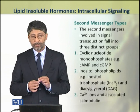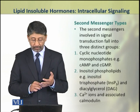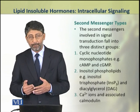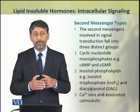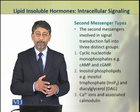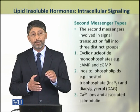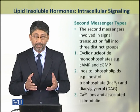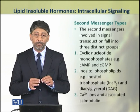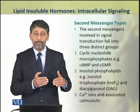Dear students, the second messengers involved in signal transduction pathways of water soluble hormones are of three types. These second messengers may be cyclic nucleotide monophosphates, for example, cAMP and cGMP — that is cyclic adenosine monophosphate and cyclic guanosine monophosphate. The second type are the inositol phospholipids, for example, inositol trisphosphate and diacylglycerol (DAG). The third type of second messengers are the calcium ions and the protein called modulin which is associated with these calcium ions.